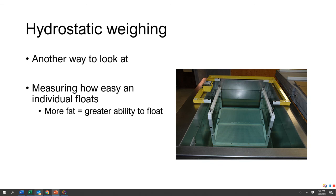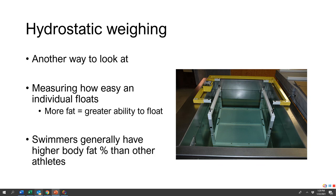Tying into this — you may have noticed on the chart at the end of the last video — athletes have different body compositions. For example, swimmers generally have higher body fat than other athletes because it helps them float. If you're floating on top of the water, it makes it a little easier to propel yourself through it.